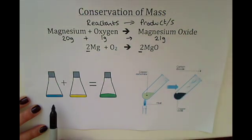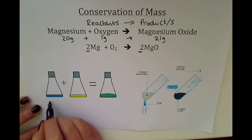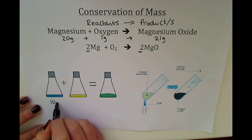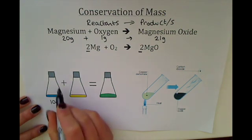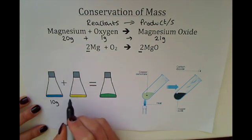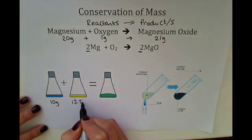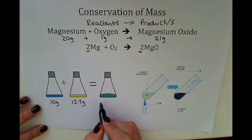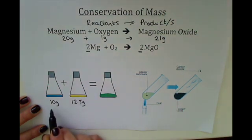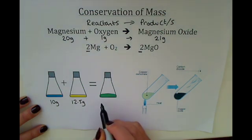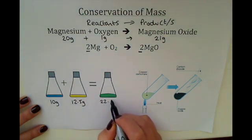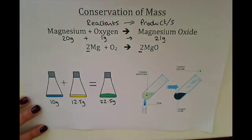In this example, if you had one solution that was 10 grams and reacted it with a solution that was 12.5 grams, the product made must equal 10 plus 12.5, and therefore must be 22.5 grams.